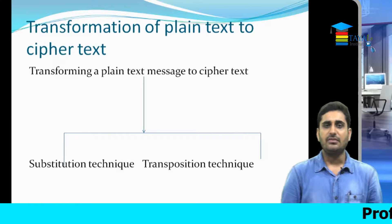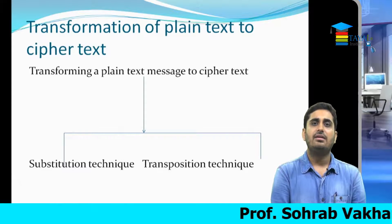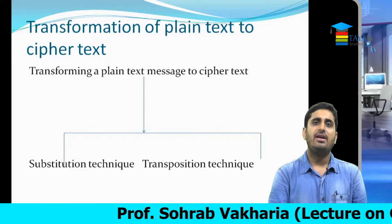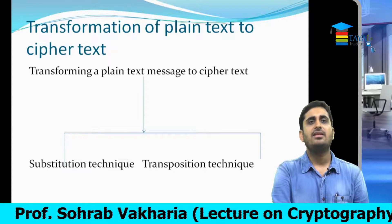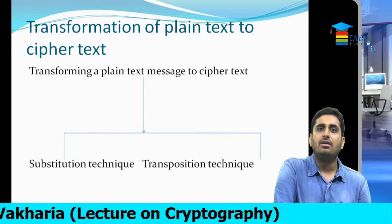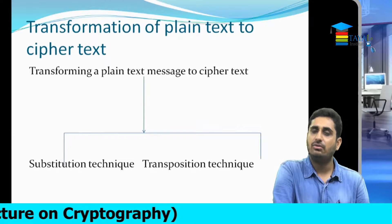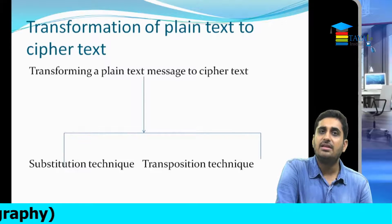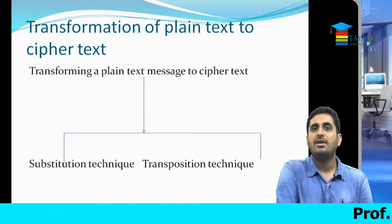Julius Caesar started with an algorithm where he would simply shift one character to another — A to B, B to C, C to D. Or at most he would shift the place of A to C, meaning shifting one, three, or four places ahead. If A is replaced by C, then B would be replaced by D, and so further.